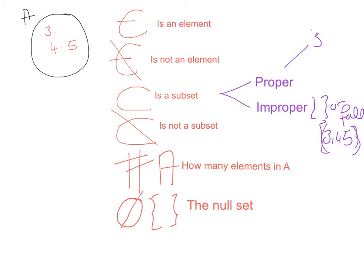So you could have three on its own, four on its own, five on its own, then you could have three and four, three and five, and then the last one is four and five. So they are the proper subsets of A.